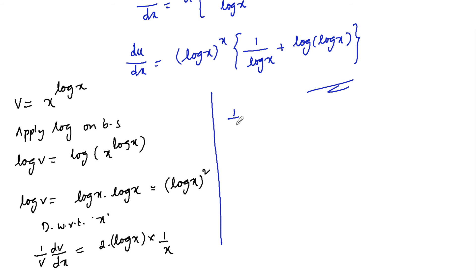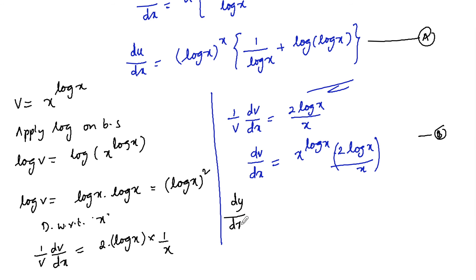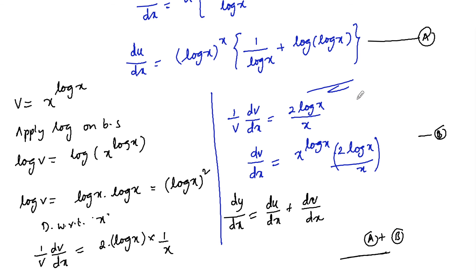So 1/v times dv/dx equals 2 log x over x, or dv/dx equals x^(log x) times 2 log x divided by x. Since dy/dx equals du/dx plus dv/dx, adding both results gives the final answer.